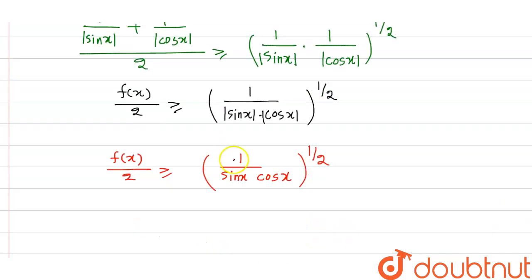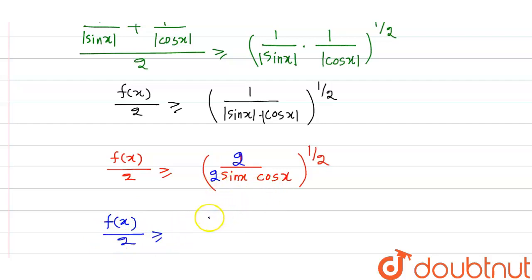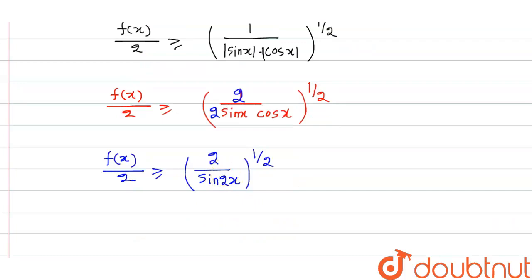So f(x)/2 ≥ √(2/sin2x). The maximum value of sin2x is 1, so f(x) ≥ 2·√2, which means f(x) ≥ 2√2.